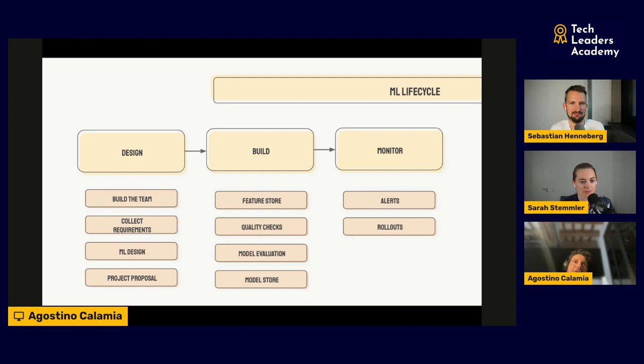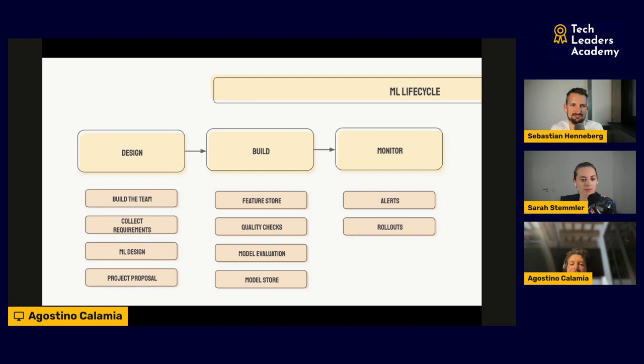Then data quality checks — something I'm personally passionate about. It's a little boring but makes your life easier. Often you build a model with amazing accuracy and then don't trust it, so you dive into the data and find missing values and issues. You iterate and iterate until you've found all the problems. If you have automated data quality checks in place from the very beginning, that's avoided — it's a hack everyone should implement to speed up development.